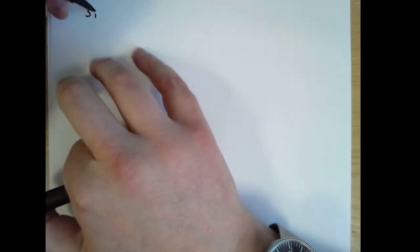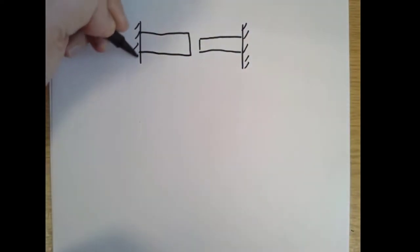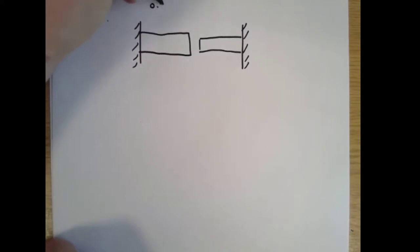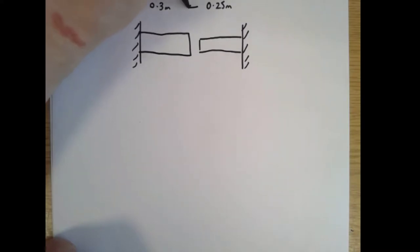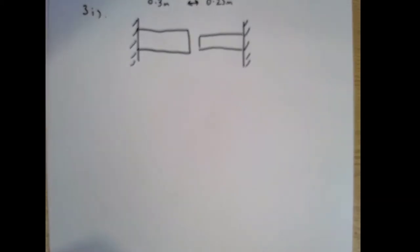Question three, part one. This length is 0.3 metres, this is 0.25 metres, the gap is 0.5 millimetres — 5 times 10 to the minus 4 metres. Obviously everything's not drawn to scale here; the gap is really very small, but that's fine.